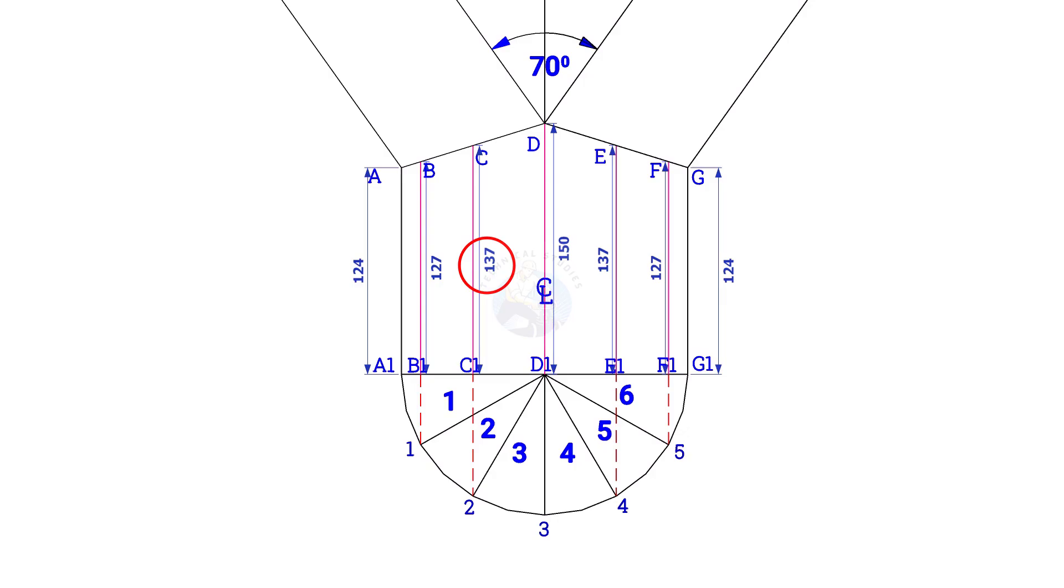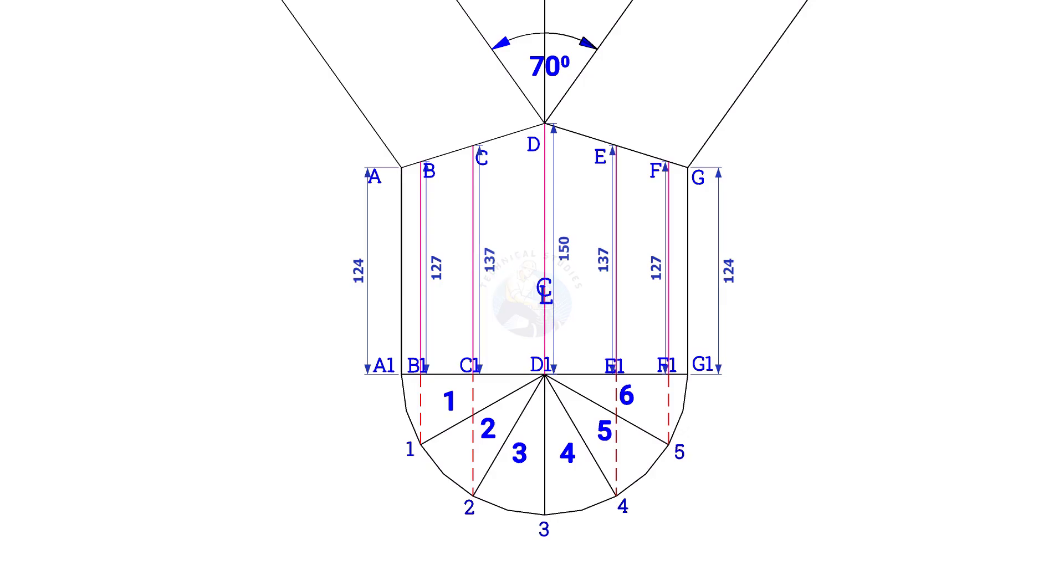Now, calculate the circumference of the pipe. Multiply the pipe diameter by 3.14 or pi. Since the diameter of the pipe is 168, multiply it with 3.14.